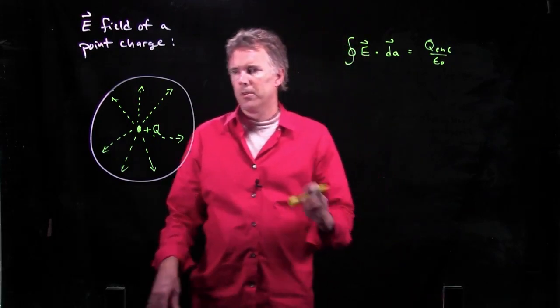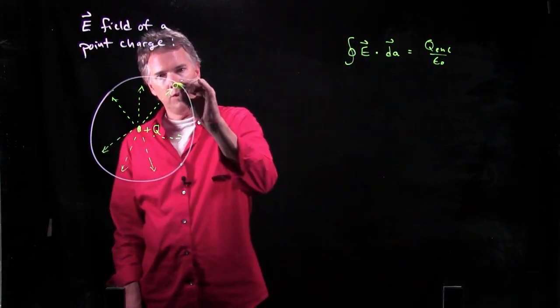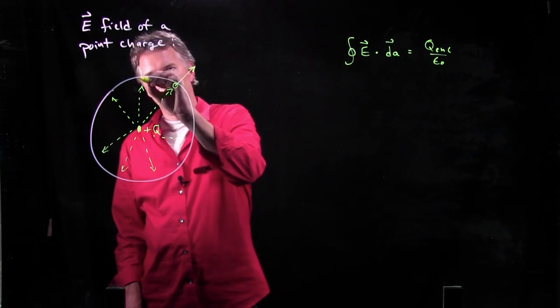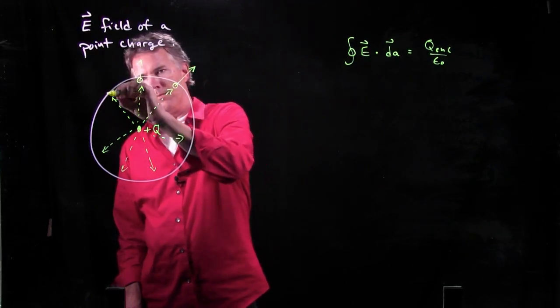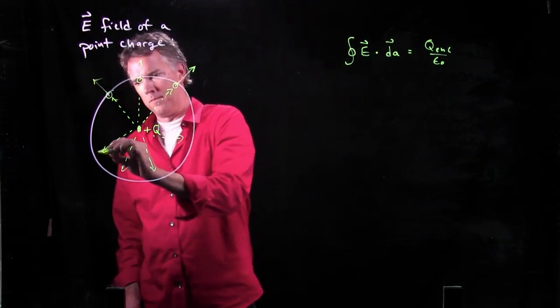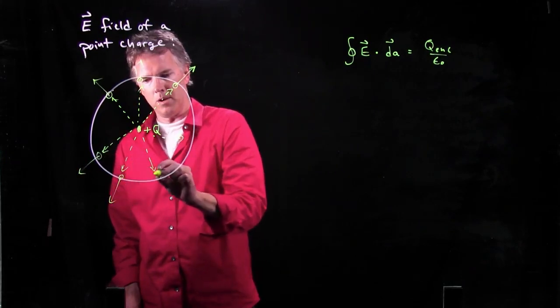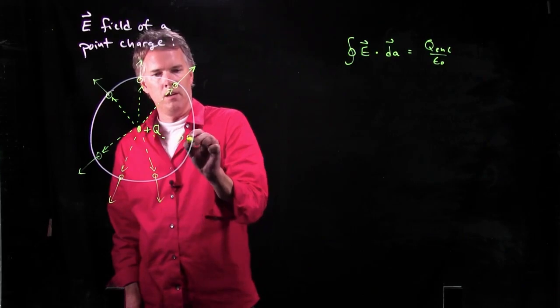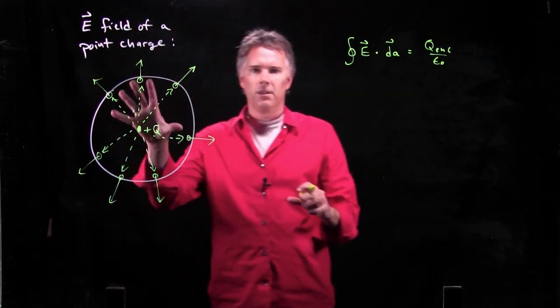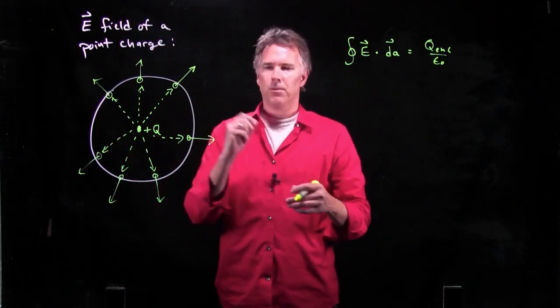And now you see why I drew it with dashed lines, because the E fields are inside until they poke out through the surface. So this is what I'm trying to represent here. E fields are inside this ball, and then they poke out through the surface.